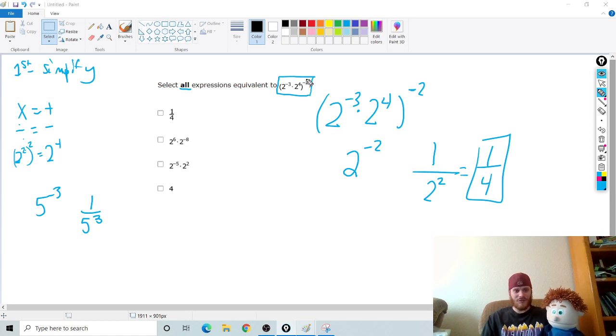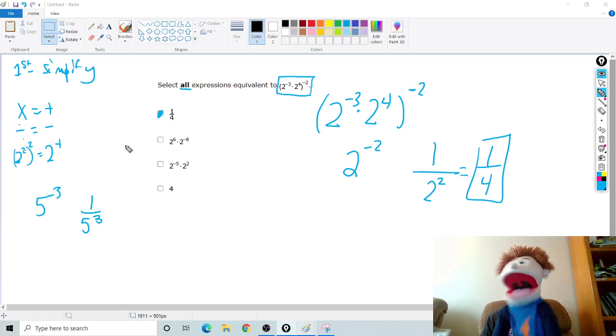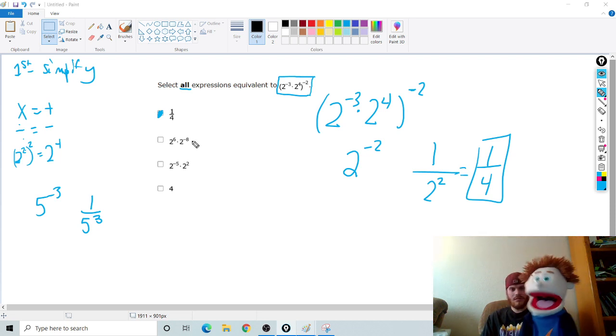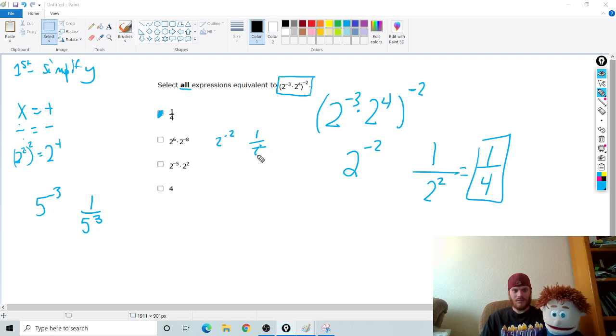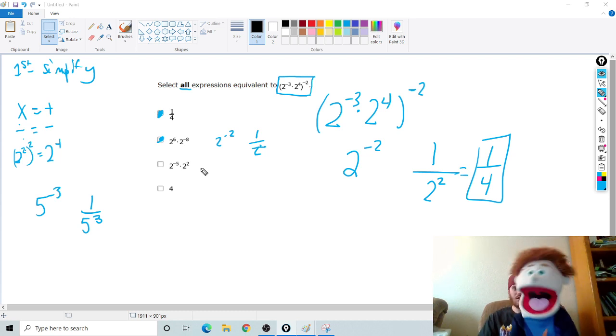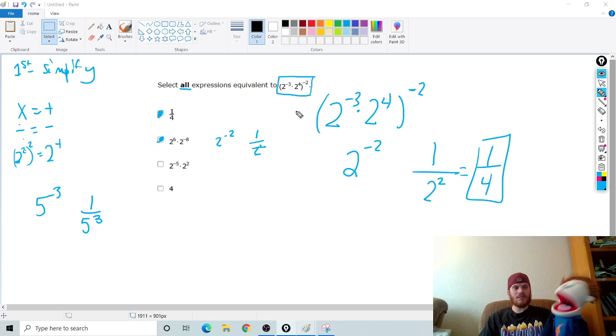So, now we need to find all the expressions. After we simplify the first one, the next thing to do is go through and simplify all the answers to see which ones match. So, notice 1 fourth. Now I need to look at this one. This is 2 to the 6 times 2 to the negative 8. It's multiplication. So I add. 6 plus negative 8 is negative 2. So, that's 2 to the negative 2. Is that going to be the same thing? Yeah, you just 1 over and then 2 squared. Good. What about this one? No, no, no, it's not. Why not? Because negative 5 plus 2 is negative 3 and that's not the right answer. Good call. What about 4? No, it has to be 1 fourth. Good. So, you got the two right answers.